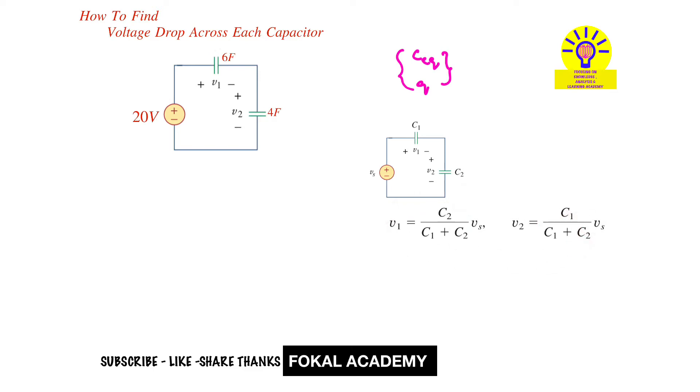This is C1 capacitor and this is C2 capacitor. Now I want V1. So V1 equals the opposite capacitor, that is C2. Here C2 is 4 Farad, divided by C1 plus C2, which is the sum of these two capacitors: 6 plus 4 equals 10.